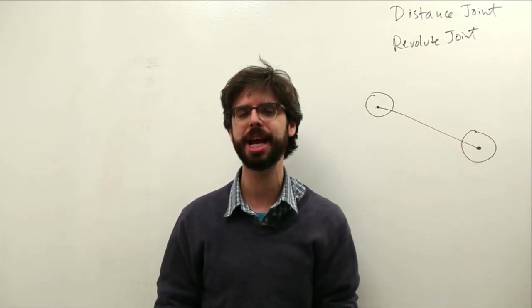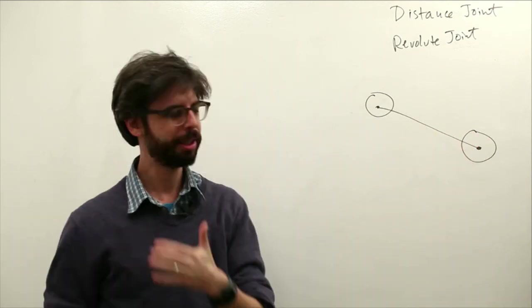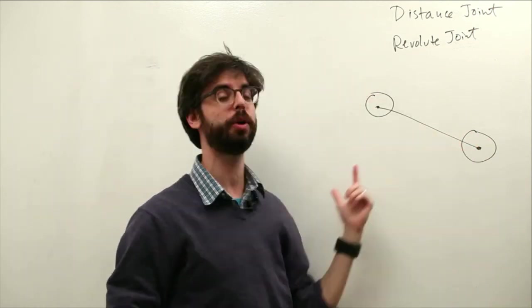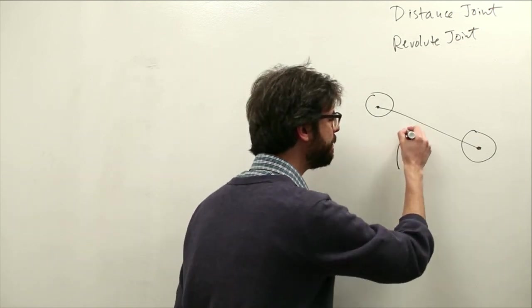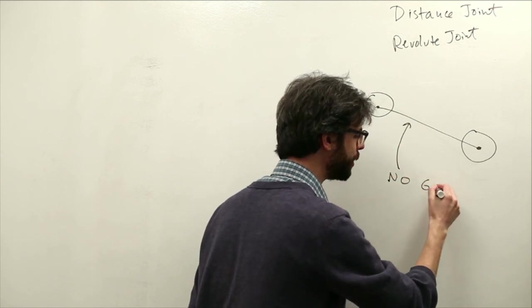It's going to bind these two bodies together and when we run a processing sketch you're going to see that as this one falls it's going to pull this one along with it. Now one thing that we should really emphasize here with Box2D joints is they have no geometry.